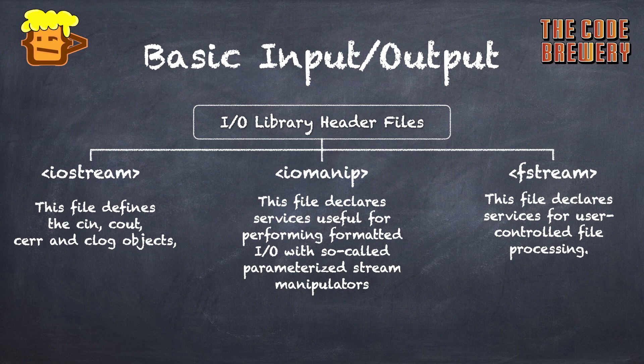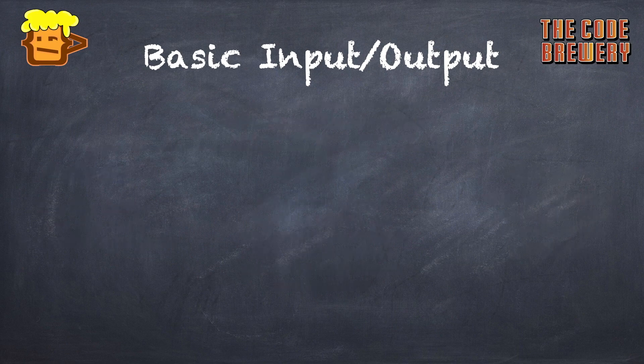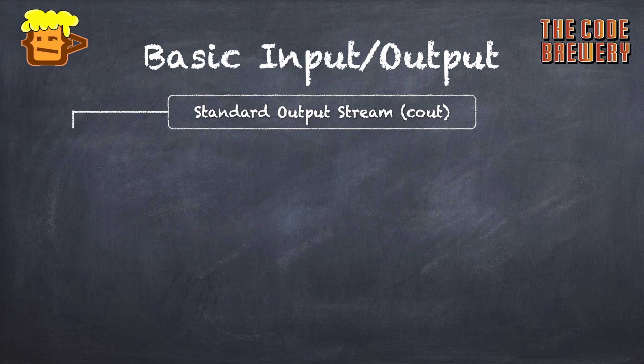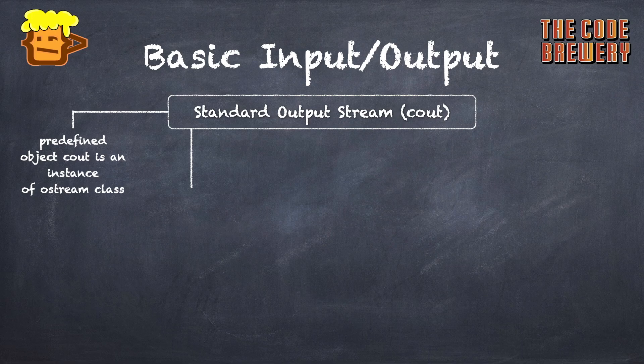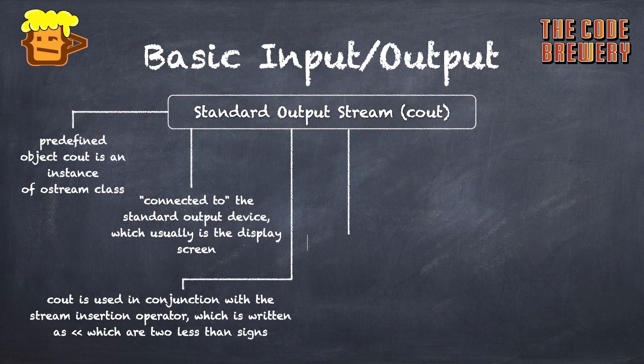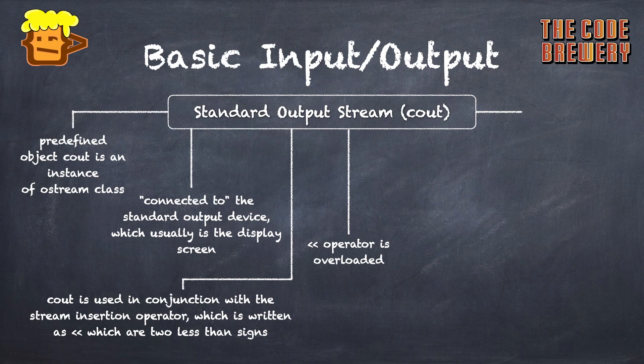If we talk about the standard output stream cout: the predefined object cout is an instance of the ostream class. The cout object is connected to the standard output device, which is usually the display screen. Cout is used in conjunction with the stream insertion operator, which is written as two less-than symbols (<<), as shown in the example.